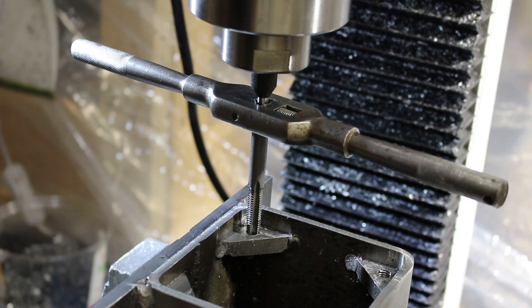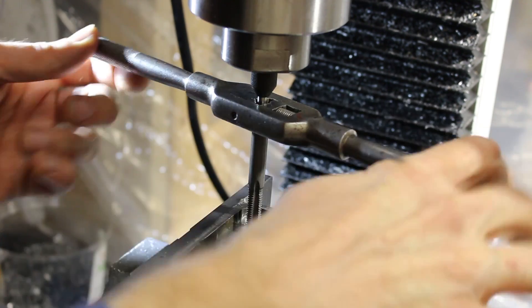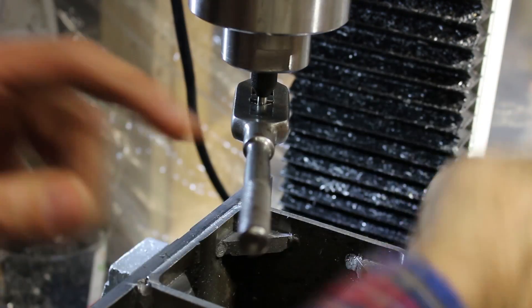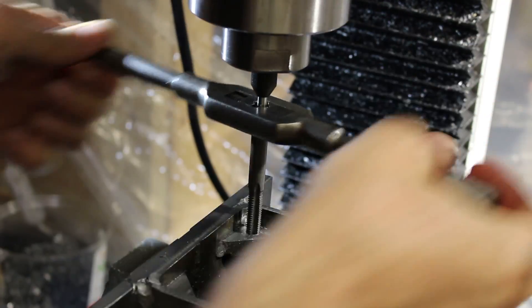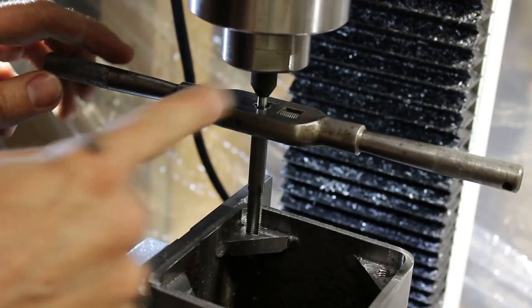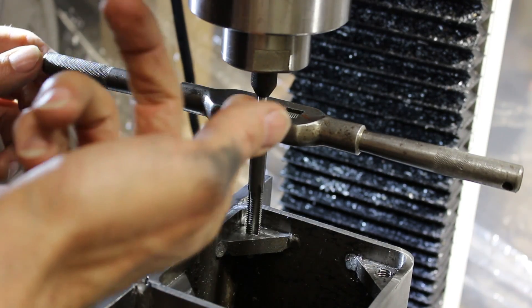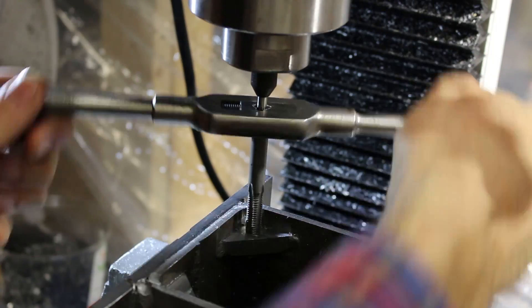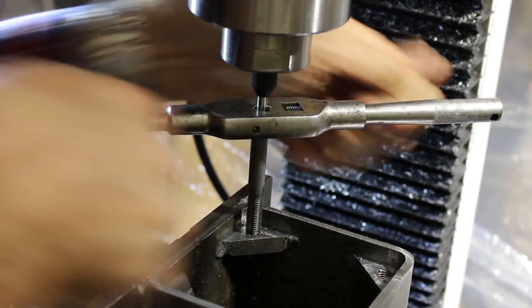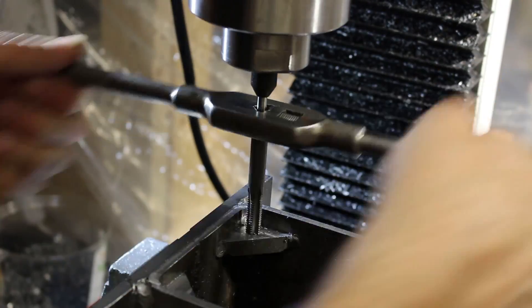I drilled the holes to 17.64 and now I'm tapping them with an M8 metric tap to match the mounting bolts I'm going to use. And I'm using a spring-loaded tap guide mounted in the collet, positioned exactly above the hole so that I get a nice vertical start to the tap and a little bit of tapping fluid to help it go in.